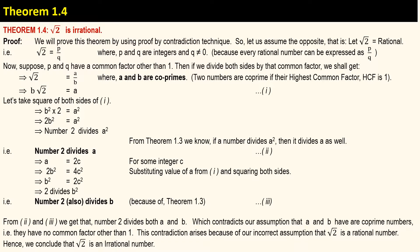Theorem 1.4 states that the square root of 2 is irrational. Let's try to prove this. We will prove this theorem by using the proof by contradiction technique.